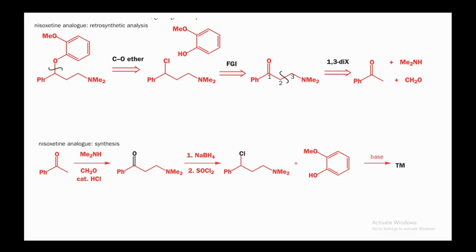Another example using the Mannich strategy: the compound contains an ether linkage — disconnect the C–O ether bond to get phenol and an alkyl halide. Do FGI: convert the alkyl chlorine to OH, then oxidize OH to ketone. Disconnect between positions 2 and 3 (Mannich-type reaction). Combine the reagents to give the product, reduce the ketone to alcohol, react with thionyl chloride to give the chloride (since alcohols are poor leaving groups), then react with phenol in the presence of base to give the target molecule.